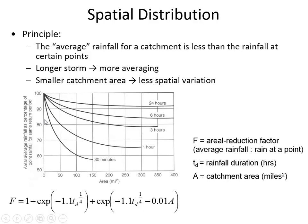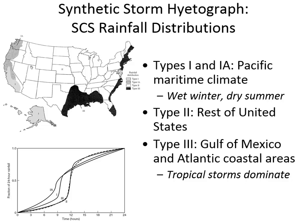It's important to understand the trends of temporal distributions — greater intensity for short durations — and how that relates to watershed size. Here's a map illustrating the different SCS rainfall distributions. We're here in West Virginia; all of West Virginia is in the Type 2 region, and most of the country is Type 2.